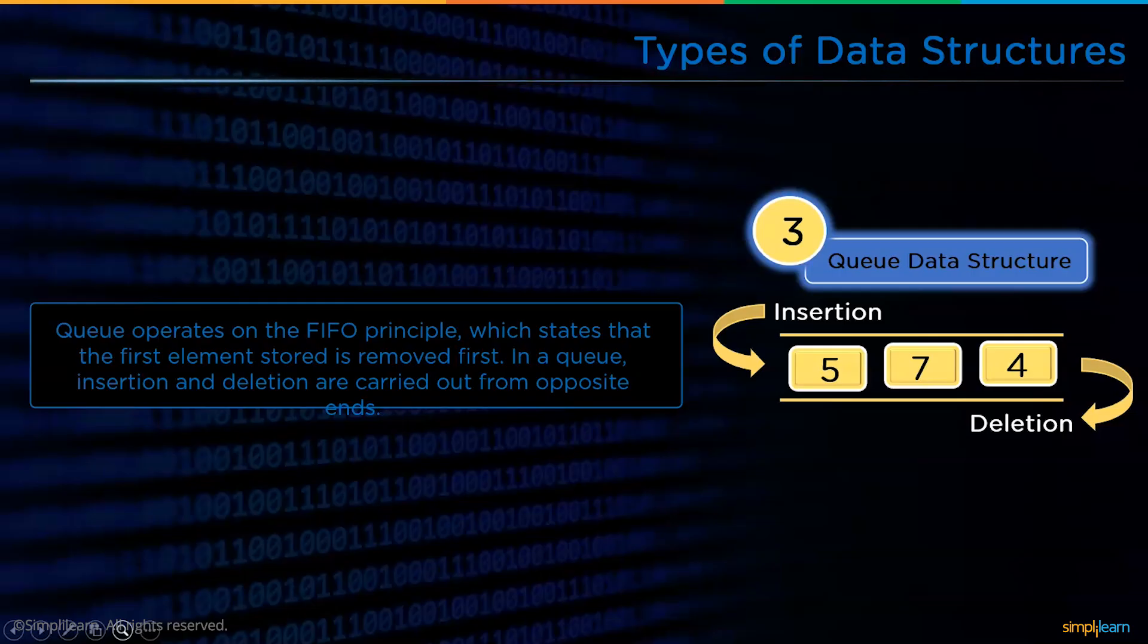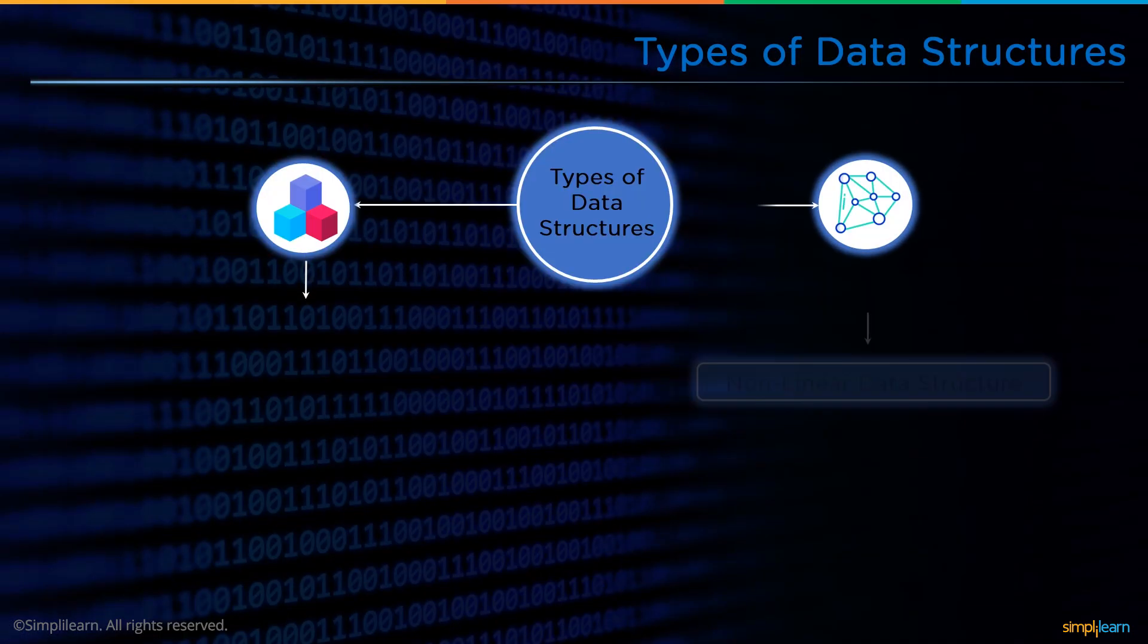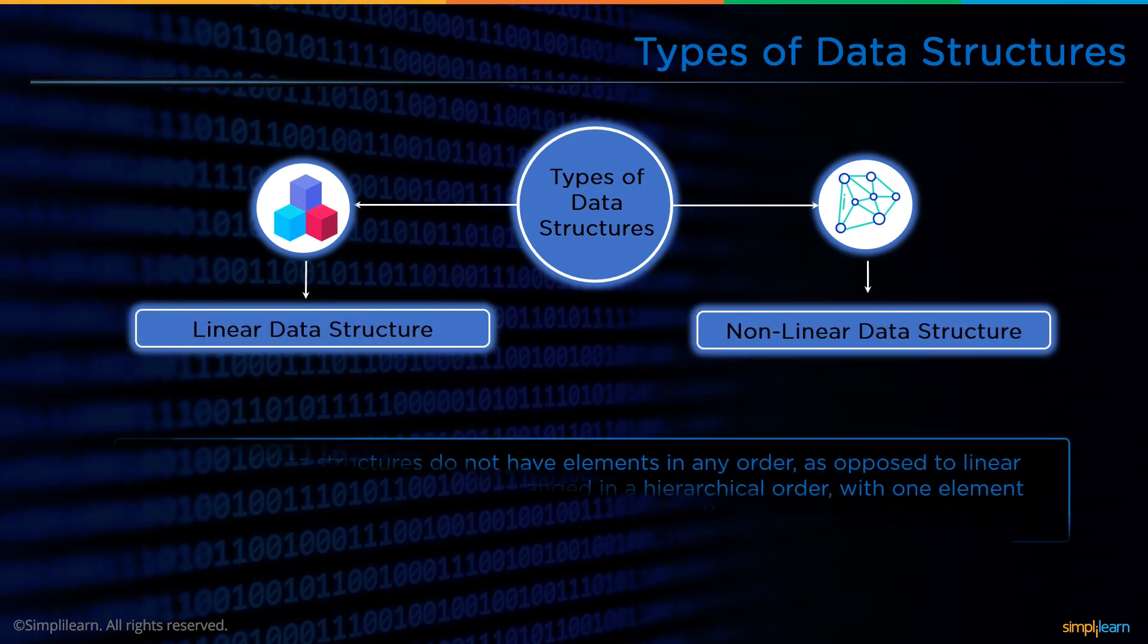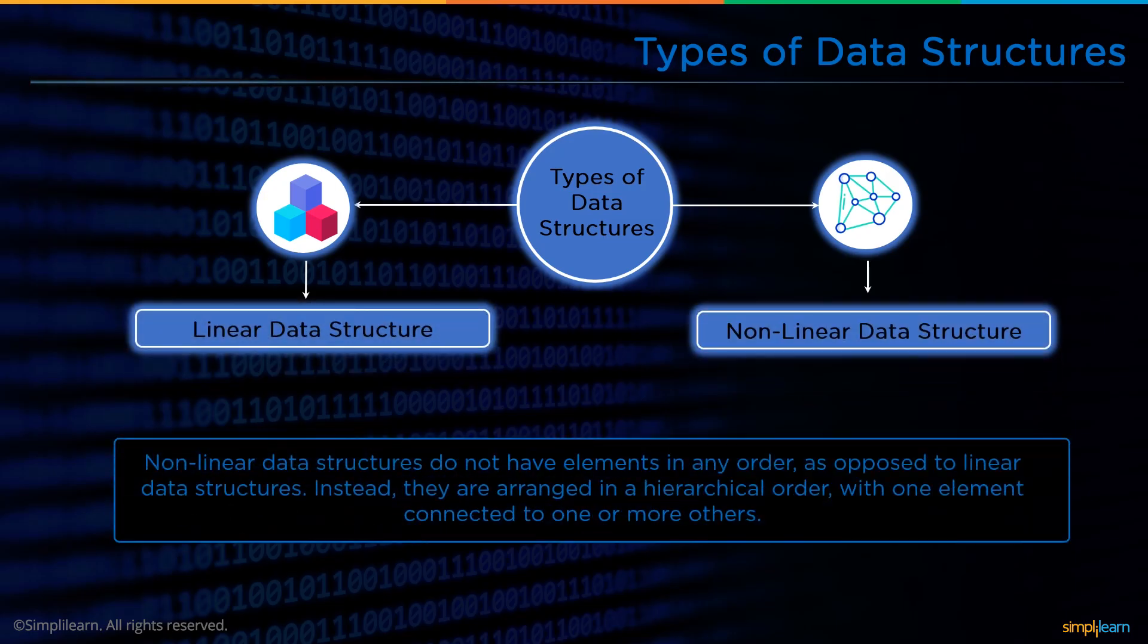In a queue, insertion and deletion are carried out from opposite ends. Now we will discuss the second type of data structures, which are the non-linear data structures. Non-linear data structures do not have elements in any order, as opposed to linear data structures. Instead, they are arranged in hierarchical order with one element connected to one or more others.